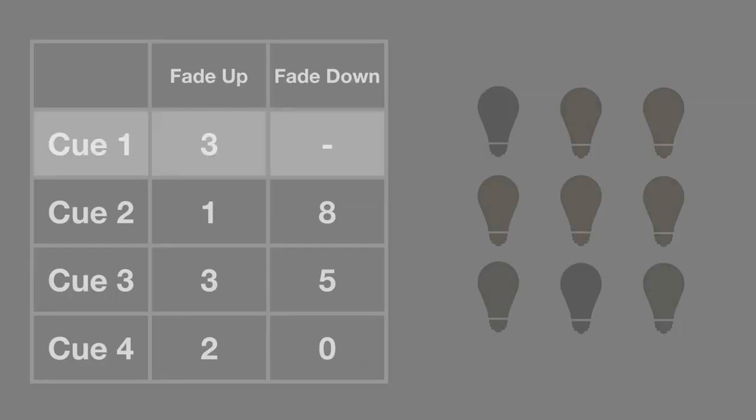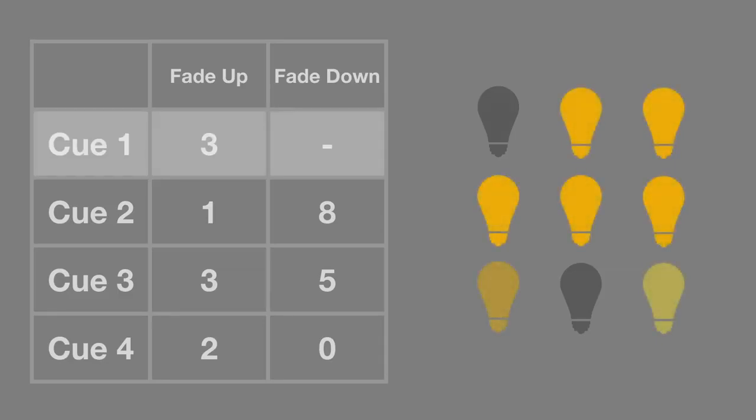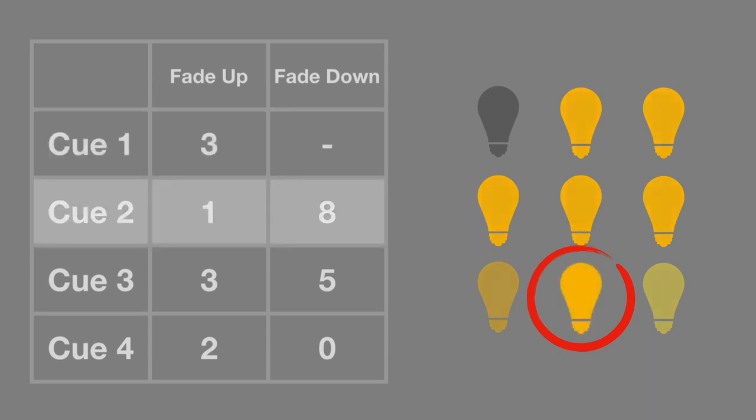For example, cue 1 is a bright musical number, and cue 2 is a solo performance with a single spotlight. If cue 2 has an uptime of 1 second and a downtime of 8 seconds, the solo spot will rise to its new intensity quickly, whilst all the other lights will fade down much more slowly.